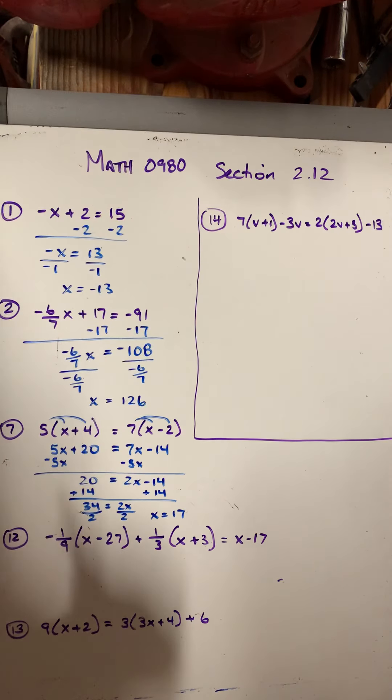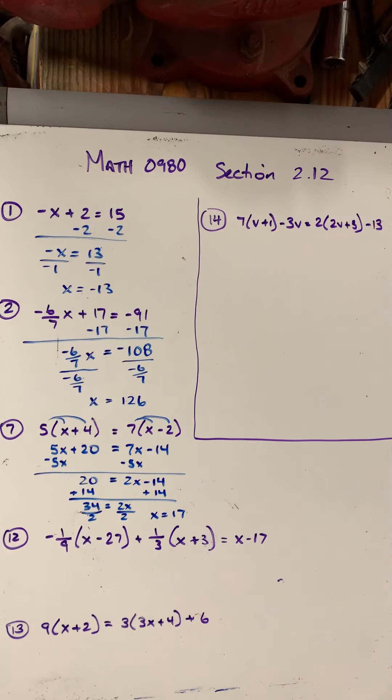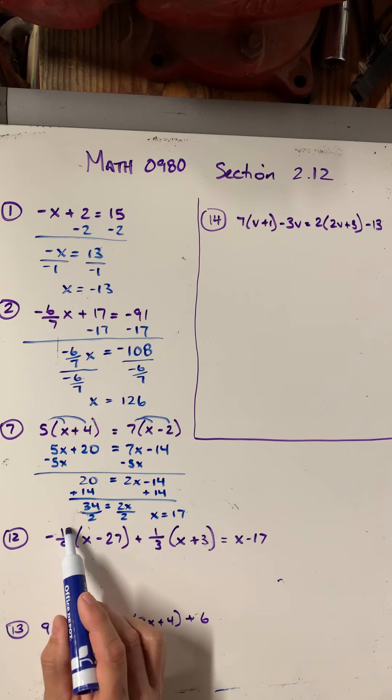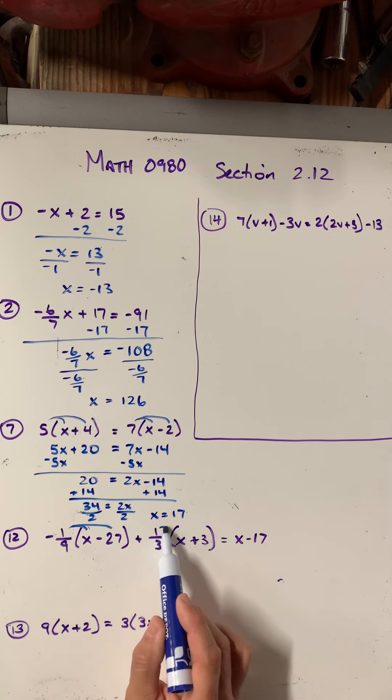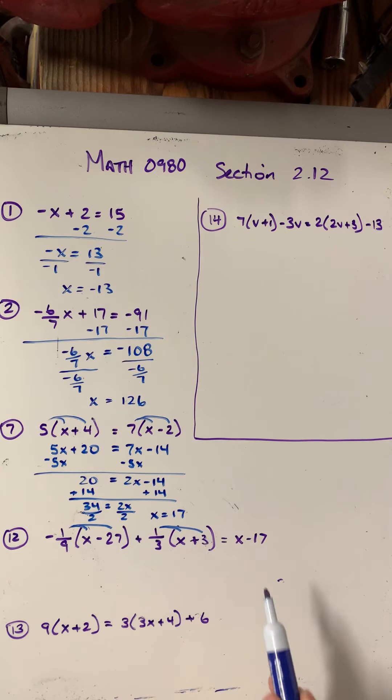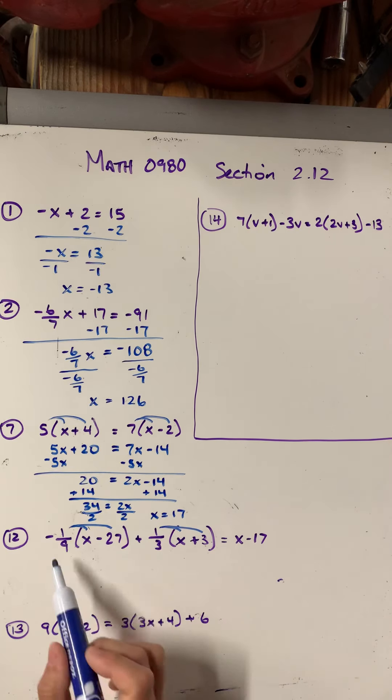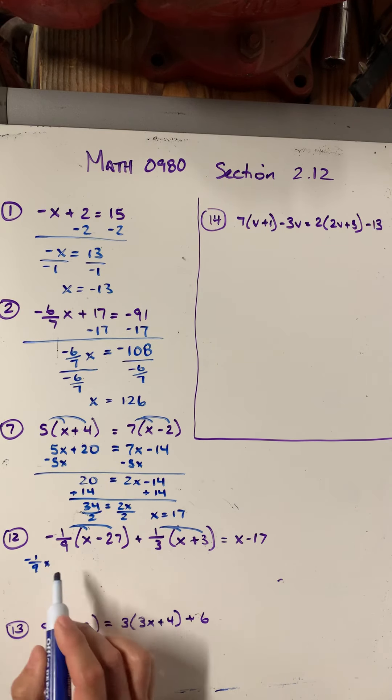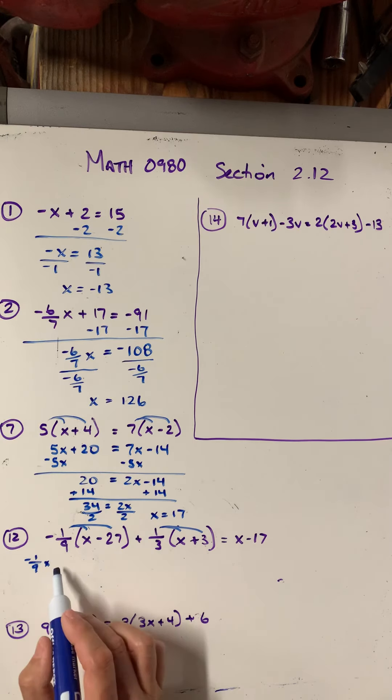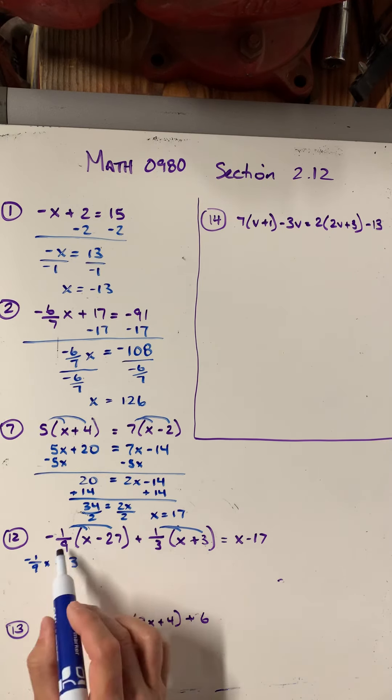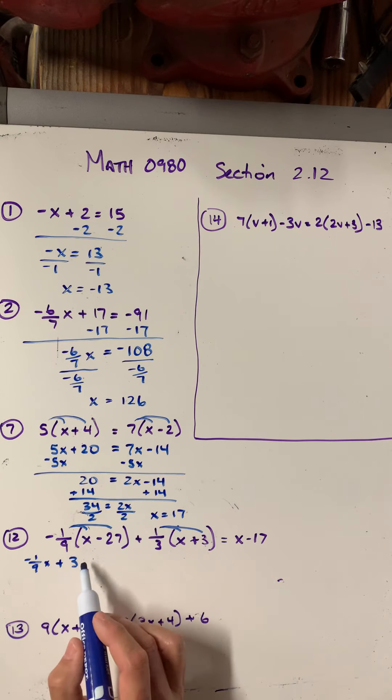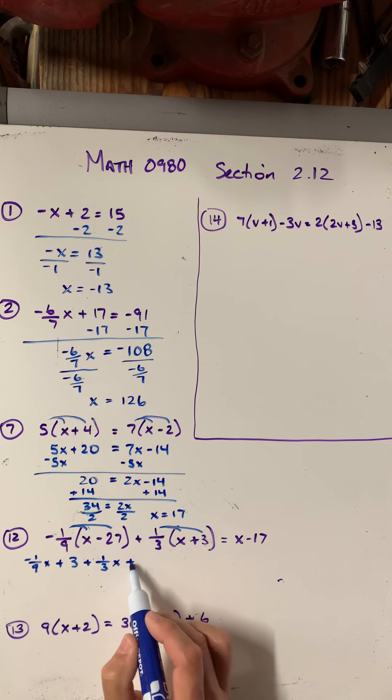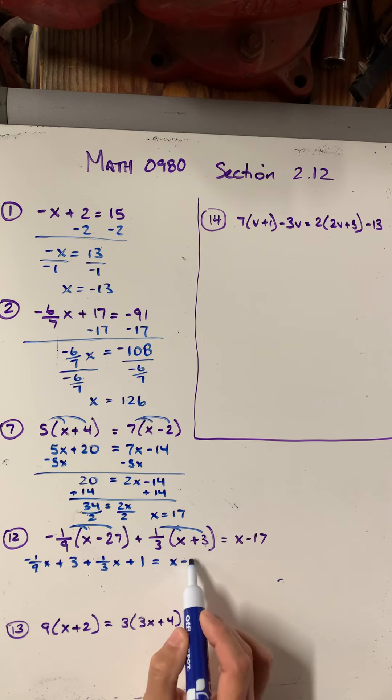Let's look at number 12, which is a little more difficult. It has more steps and it has some fractions. So just like in problem 7, what I'm going to start with is simplifying each side of the equal sign. Now this side is as simplified as it gets. So I'm just going to work on this. Negative 1 9th times x is negative 1 9th x. Negative 1 9th times negative 27 is a positive 3. 1 3rd times x is 1 3rd x. 1 3rd times 3 is 1 equals x minus 17.